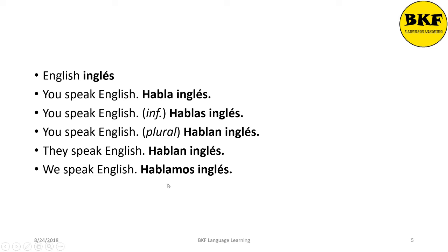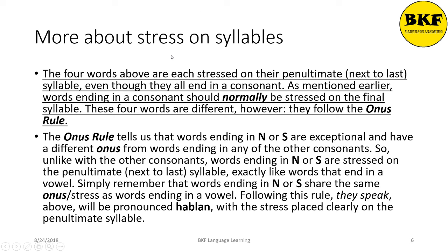More about stress on syllables: the four conjugated forms above are each stressed on their penultimate syllable even though some end in a consonant. These are exceptions that follow what is known as the onus rule. The onus rule tells us that words ending in n or s are exceptional and will be stressed on the penultimate syllable. So 'they speak' is pronounced hablan with the stress clearly on the penultimate syllable.